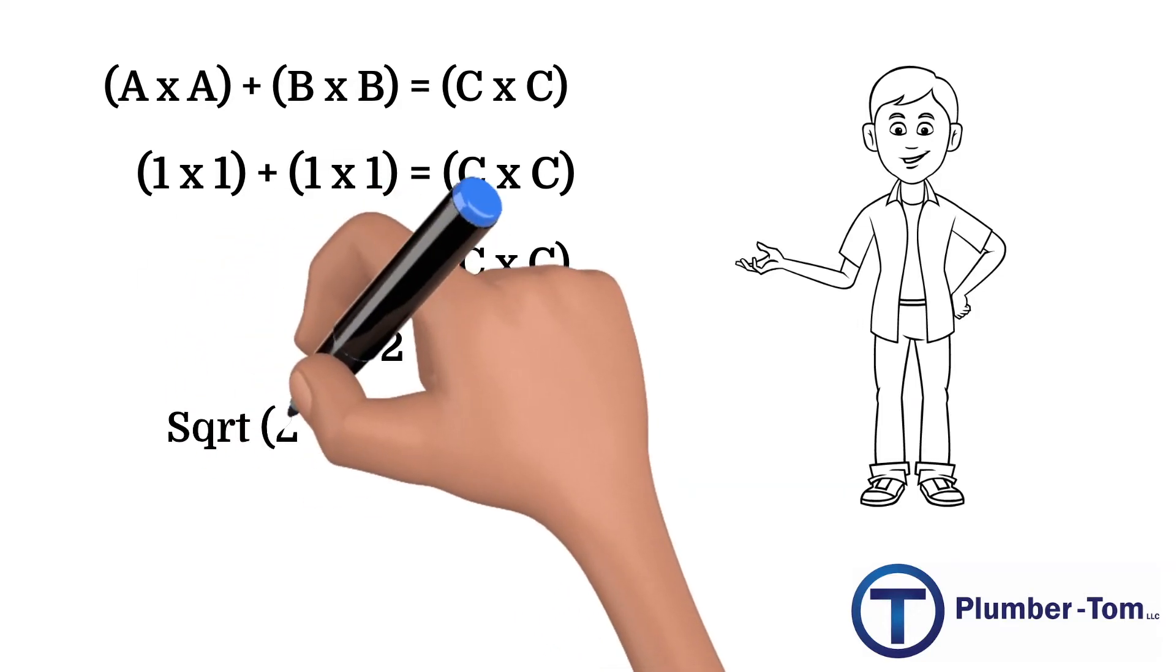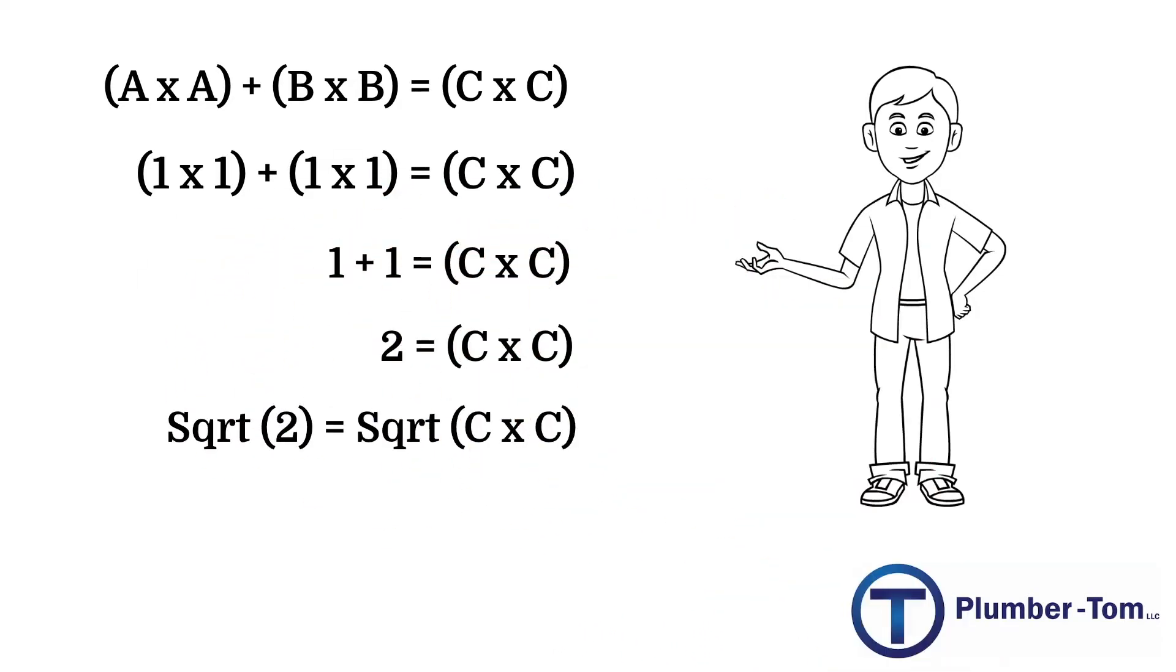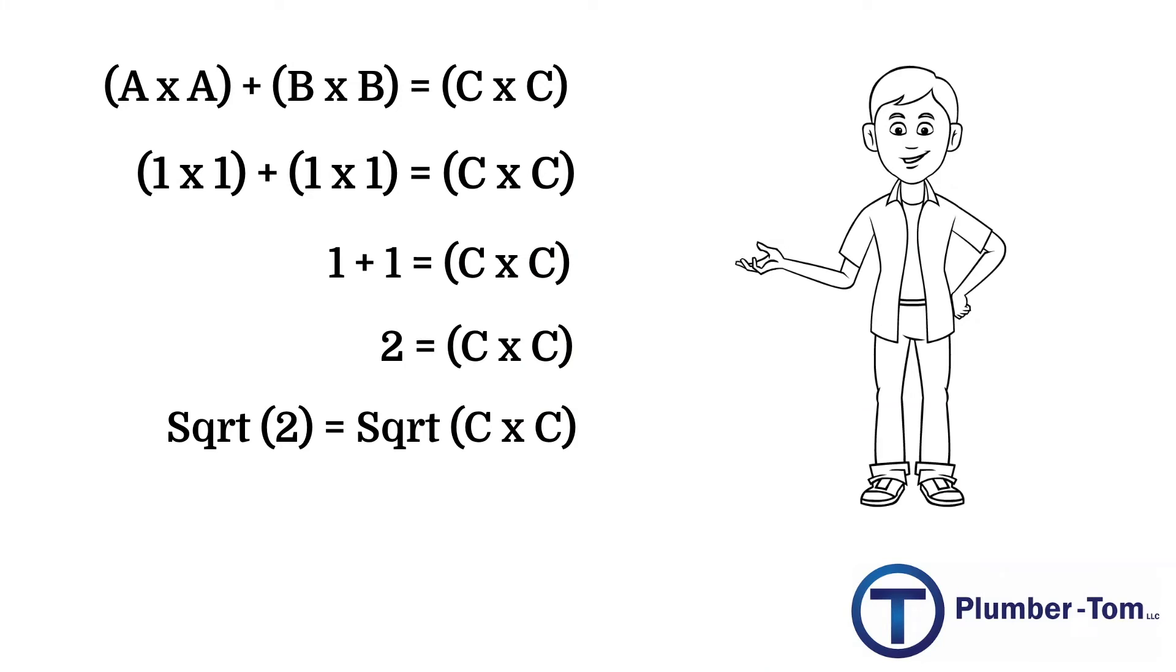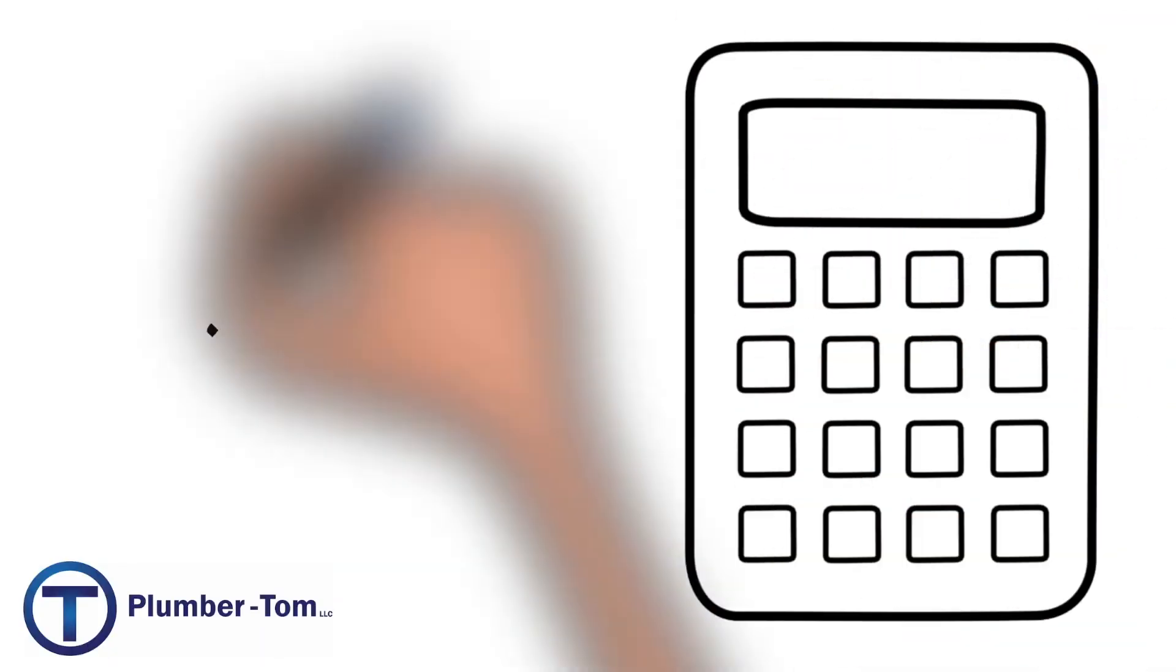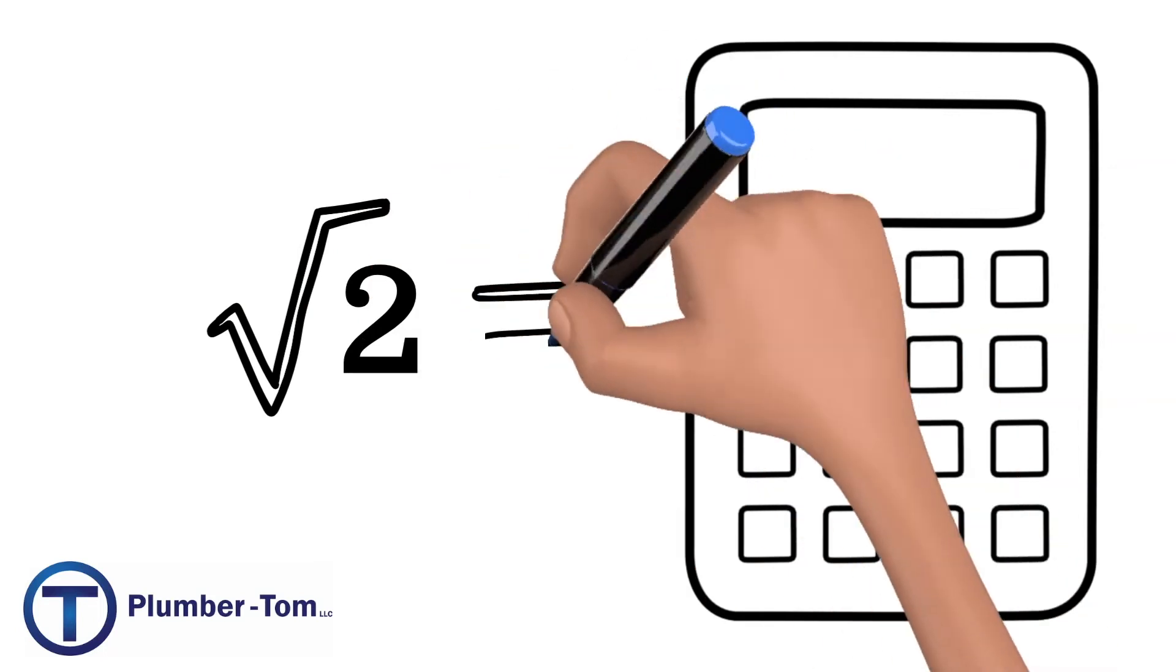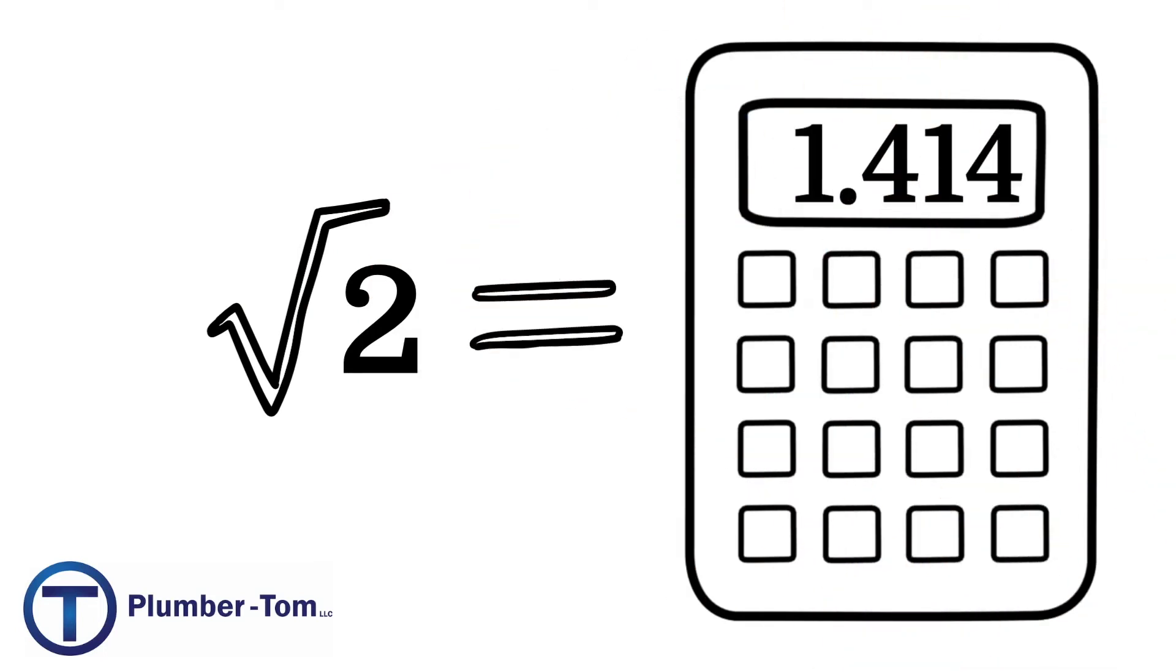If we take the square root on one side of the equation we must also take the square root of the other. This would be the square root of c times c giving us c all by itself. To speed things up a bit, let's just use a calculator and take the square root of 2. We will get 1.414.